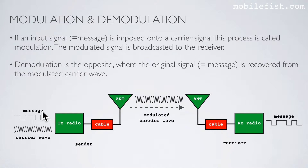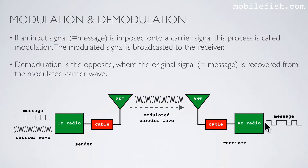If an input signal, also known as a message, is imposed onto a carrier signal, this process is called modulation. The modulated signal is broadcasted to the receiver. Demodulation is the opposite, where the original signal is recovered from the modulated carrier wave.